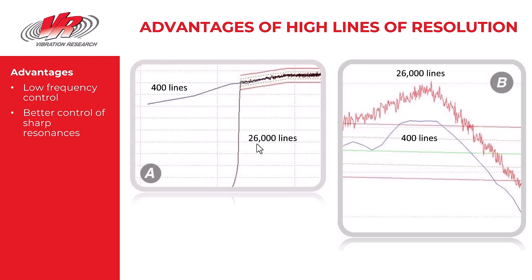A second advantage has to do with sharp resonances. A test with higher lines of resolution offers better control of sharp resonances. For the most accurate control and excitation of resonances, a minimum of three resolution bins should exist at the 3 dB frequency bandwidth of the resonance. In this picture, the blue line was the result of using 400 lines of resolution and the red line with 26,000 lines. You can see significant difference in the resonance peaks between these two resolutions. As a rule, choose high lines of resolution as you go through the process of transforming time domain data to frequency domain data.